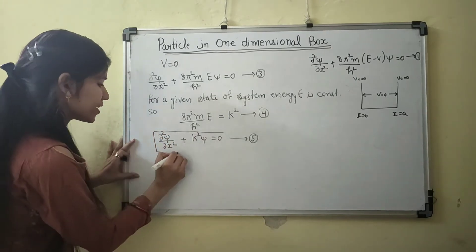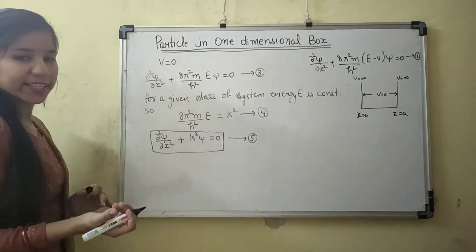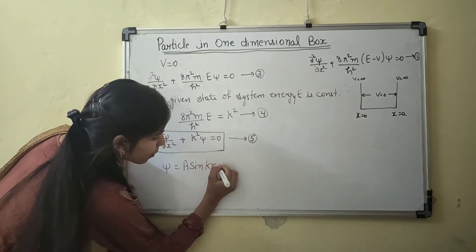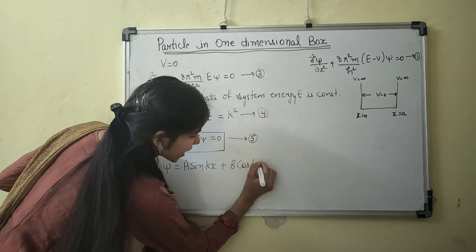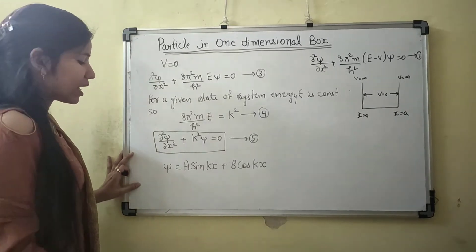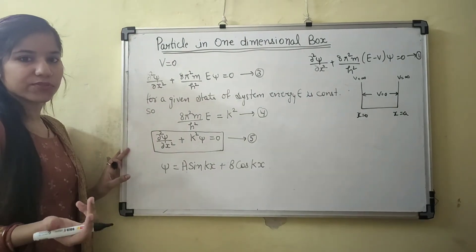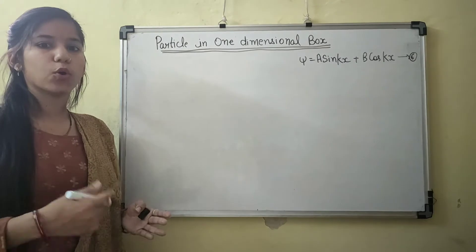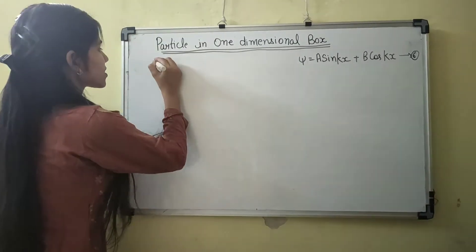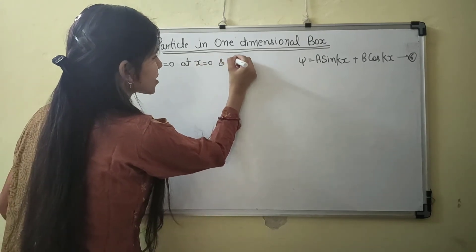Equation 5 is a famous second-order differential equation which has the general solution: ψ = A sin(KX) + B cos(KX), where A and B are constants. Depending on the values of A, B, and K there are different values of ψ, but only those satisfying the boundary conditions are acceptable — that is ψ = 0 at X = 0 and X = A.